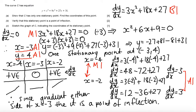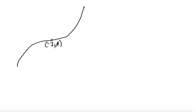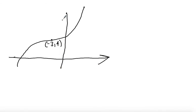Now to sketch the graph. The stationary point is at minus 3, 4, so the curve is in the negative x quadrant but above the x-axis. The curve looks something like this — here is the x-axis with the y-axis over here, and the curve continues up and down. If you get something that resembles this shape with your point of inflection marked, you get the graph mark.